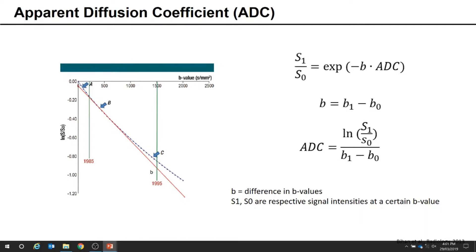The plot shown is an example of DWI signal intensities as a function of B values for the brain. B values higher than 1000 s/mm² result in signal differences deviating from linearity, and data is also less reliable at higher B values due to poor signal-to-noise ratio. So in practice, clinical DWI for the brain is done at a maximum B value of 1000. ADC maps of the brain are typically generated using B values of zero and 1000, while for other regions at least three DWIs at different B values are used to fit the data.